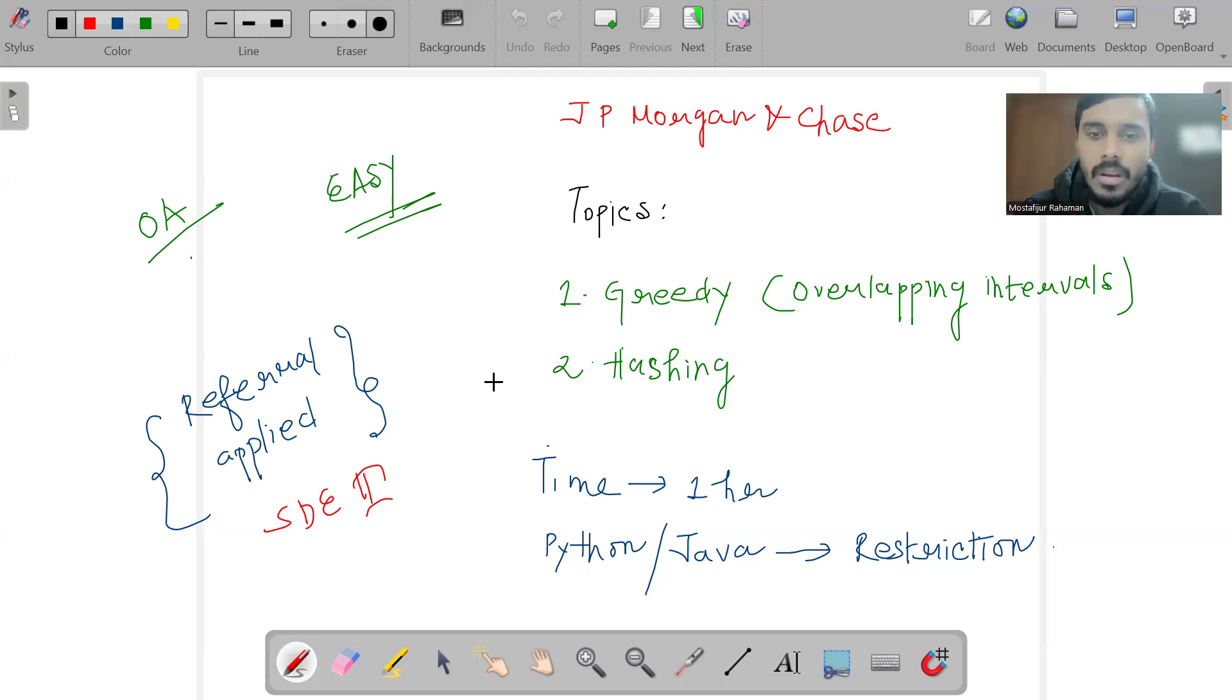The first question was about a greedy problem, kind of an overlapping intervals problem where you had to count the length of the longest interval that was overlapped with each other. The second was an ad hoc hashing-based problem.